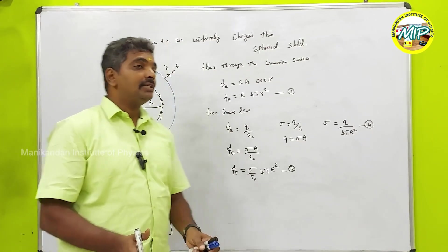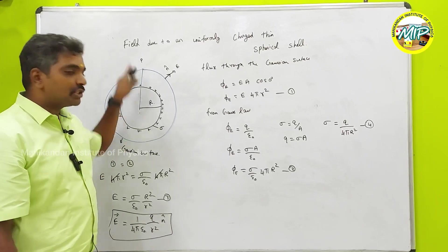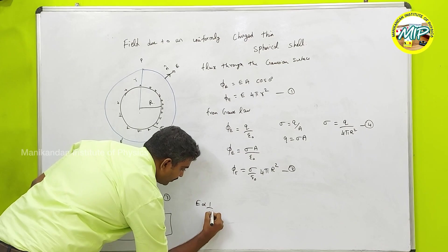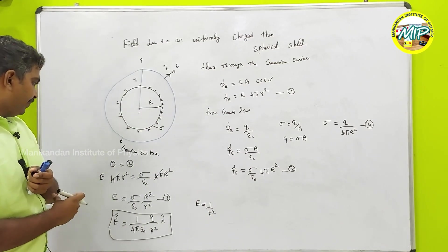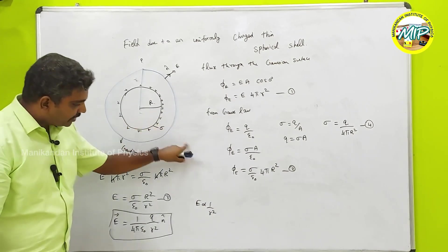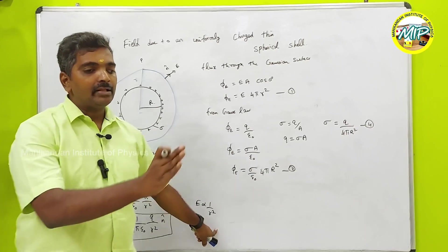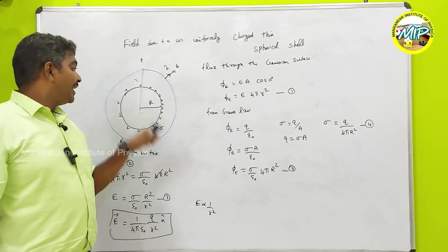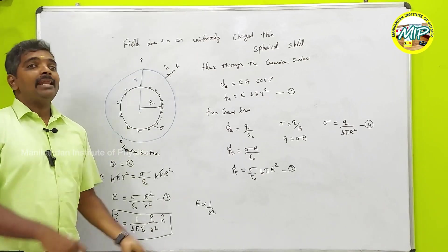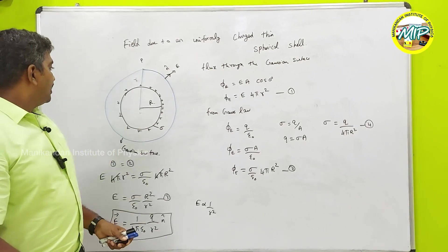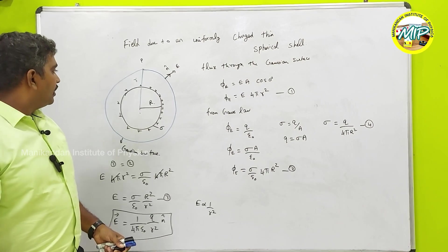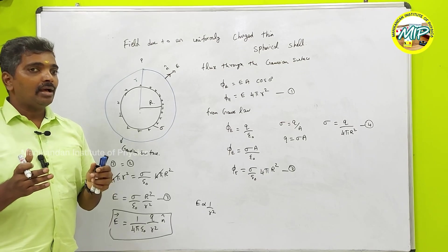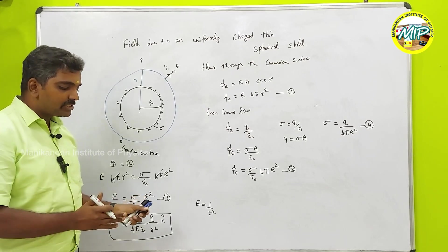The electric field outside the sphere is inversely proportional to R squared. So as you move away from the sphere, the electric field decreases. Next, let's look at what happens inside the spherical shell.